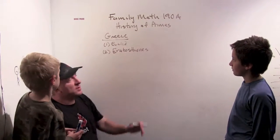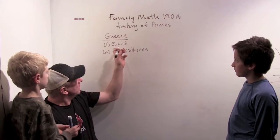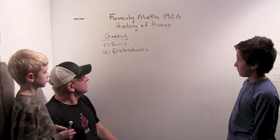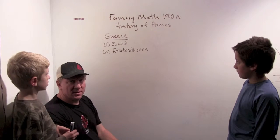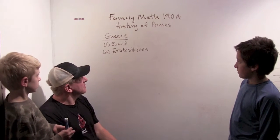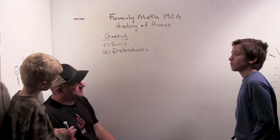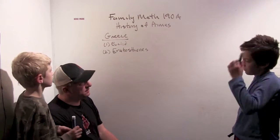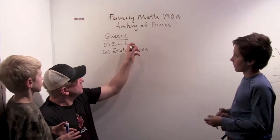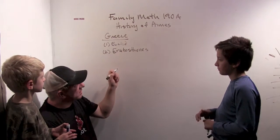So we're going to start in Greece. We have two mathematicians, Euclid and Eratosthenes. Do you know what Euclid did with prime numbers? No? Euclid understood that there are infinitely many prime numbers.